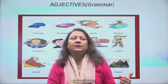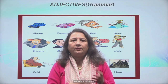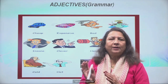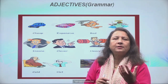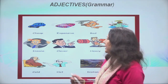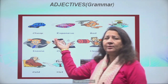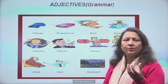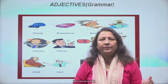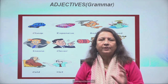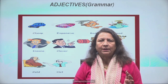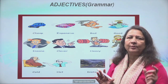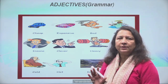Agar noun ki quality ko batata hai, to use bolta hai qualitative — good hai, bad hai, intelligent hai, honest hai. Ye sab humari quality batate hain — noun ya pronoun ki. Unhe hum kehte hain qualitative. Aur quantitative hote hain — jab humari quantity batata hai, chahe definite quantity batata hai, chahe indefinite quantity batata hai. Agar nahi samajh me aaya, today we will continue the same.